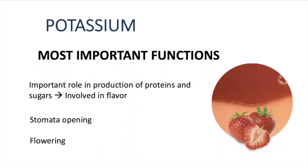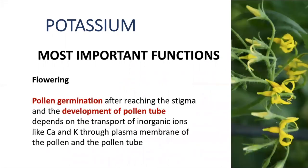To summarize the main functions of potassium: potassium is involved in fruiting — from flowering to fruit flavor — and also relates to stomata behavior. In flowering and fruiting, potassium and other nutrients are used to effectively run processes like pollen germination. If pollen cannot germinate and fertilize the ovule, we will not have fruits.